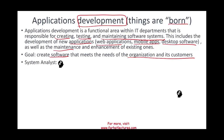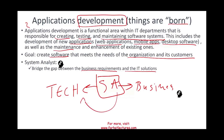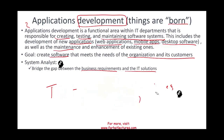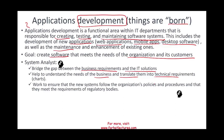In the application development area, we could have what's called system analysts. System analysts bridge the gap between business requirements and IT solutions. The system analyst is the person that can speak both the tech language and the business language — an intermediary between those two groups. They can communicate business needs to tech people and vice versa, letting business people know what tech people are capable or not capable of. System analysts help understand the needs of the business and translate them into technical requirements through charts, narratives, and meetings. They work to ensure the new system follows the organization's policies and procedures and meets the requirements of regulatory bodies.